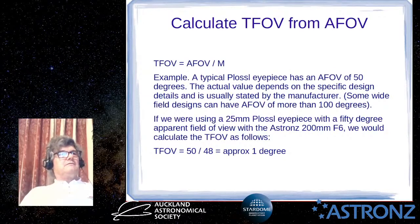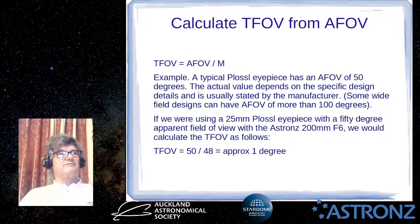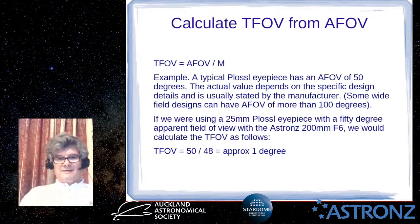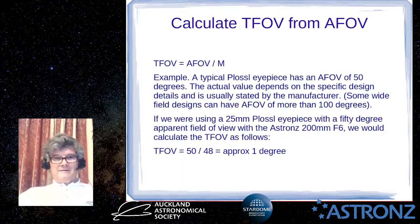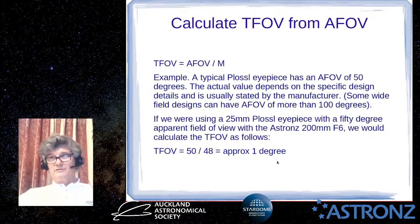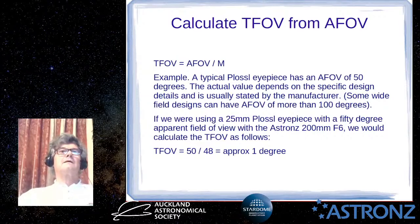We can calculate the true field of view by dividing the apparent field of view by the magnification. For example, with a 50-degree apparent field eyepiece and 48× magnification — as in the earlier example — the true field is approximately one degree on the sky.